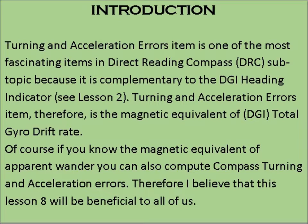Introduction. Turning and acceleration errors is one of the most fascinating items in the Direct Reading Compass (DRC) sub-topic because it is complementary to the DGI heading indicator — see lesson 2. Turning and acceleration errors is therefore the magnetic equivalent of the DGI total drift rate. If you know the magnetic equivalent of apparent wander, you can also compute compass turning and acceleration errors. I believe that lesson 8 will be beneficial to all of us.